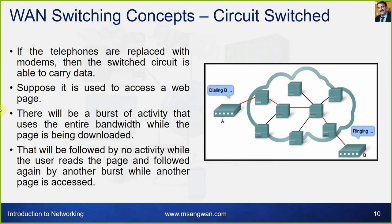If the telephones are replaced with modems, the switched circuit is able to carry data as well. Earlier, before broadband, we used telephone lines only for internet connectivity — we used a modem, dialed in, heard that connection sound, and then worked with the internet. This was the experience back in 1994-95.